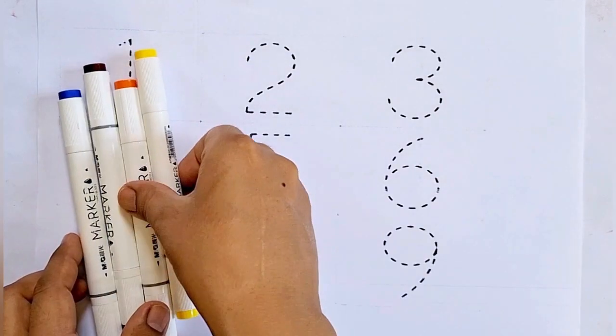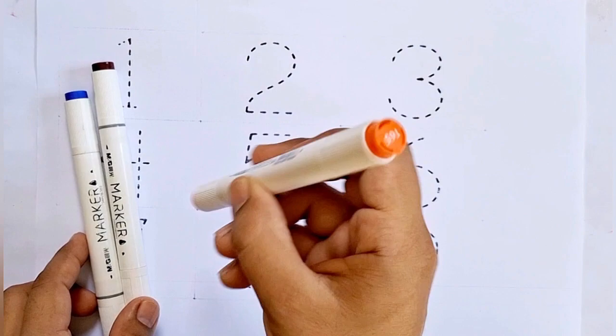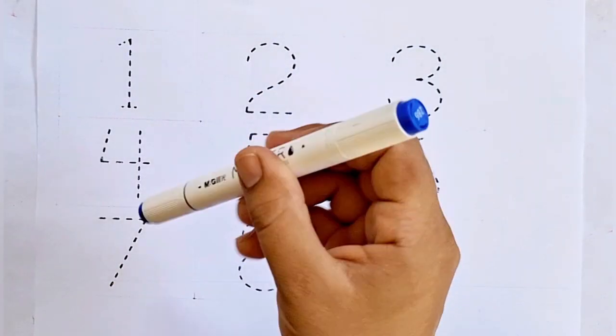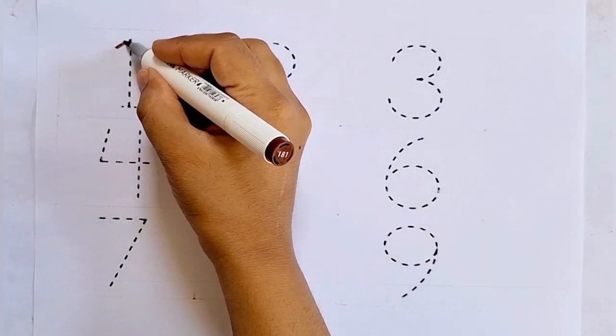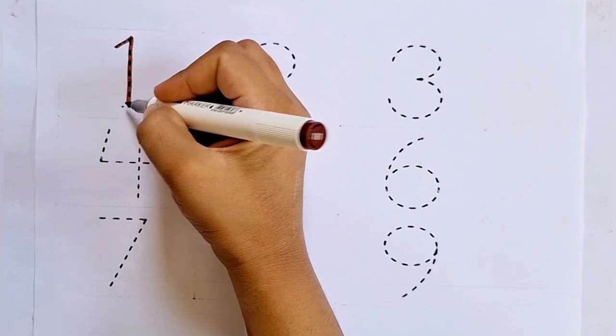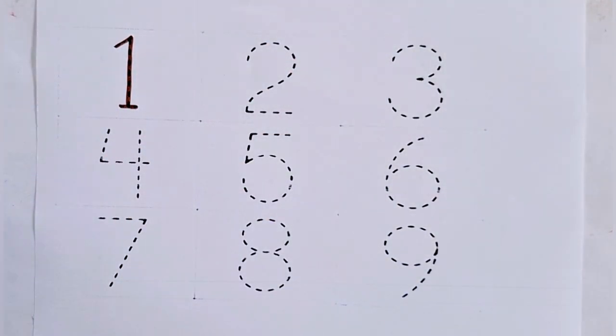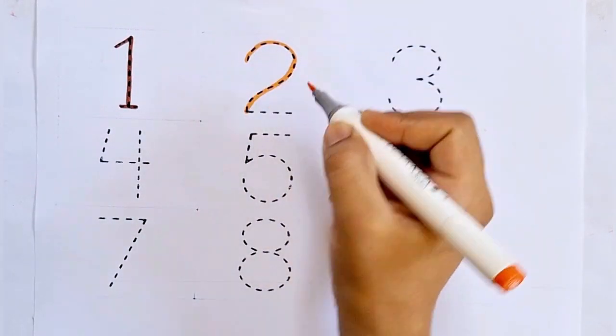...yellow, orange, brown, dark blue. One, this is one. Two, this is two. After one comes two.